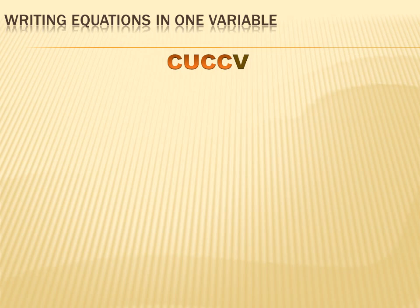Now let's take the translation of English into algebra one step further. We're going to use a strategy called CUCCV to help us translate a word problem into algebra. A lot of word problems have a whole bunch of words that aren't really relevant to the solution — they're just there to confuse you. With all those words, it's hard to focus on what's really important. So we're going to use CUCCV to help us focus on what's really important and what the question is actually asking.